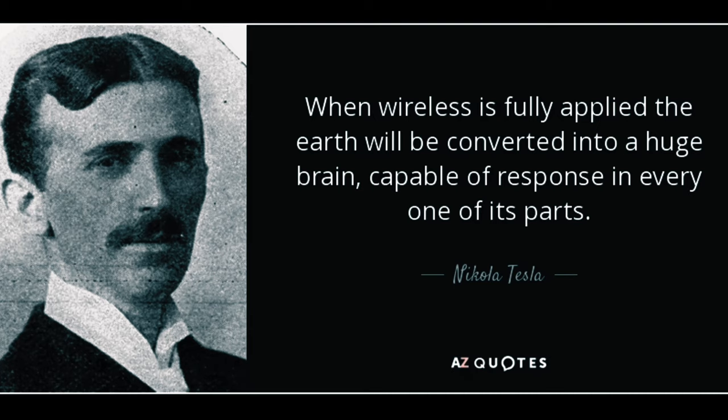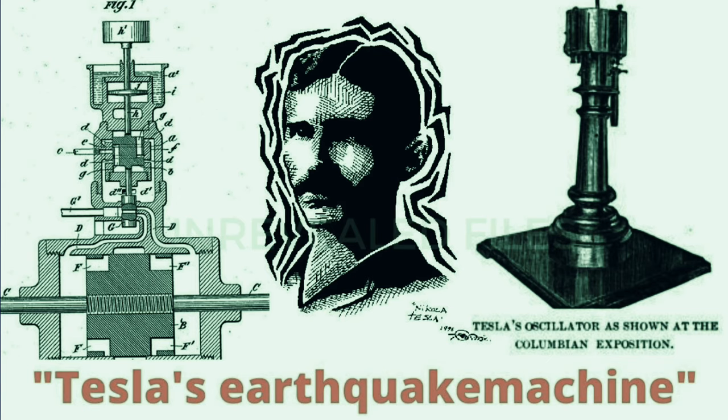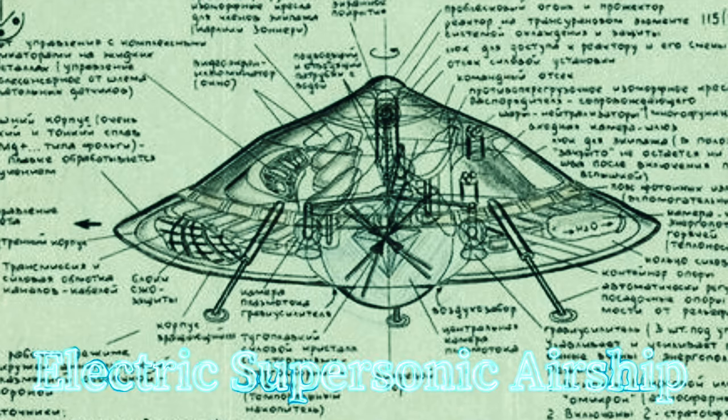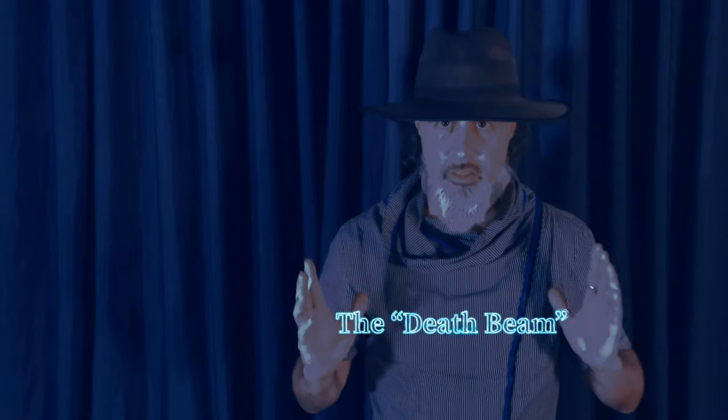When wireless is fully applied, the earth will be converted into a huge brain capable of response in every one of its parts. Few of Tesla's most controversial inventions were earthquake machine, thought camera, wireless energy, artificial tidal wave, electric power, supersonic airship, and the death beam.